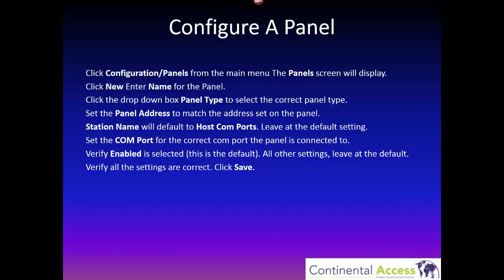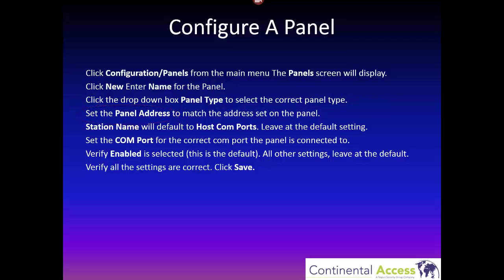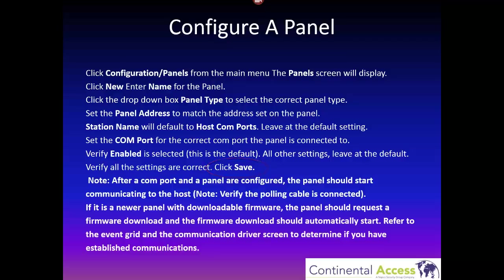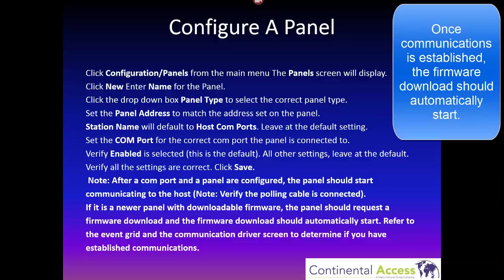To configure a panel, click Configuration then Panel, click New, enter the name for the panel, click the drop-down box, and select your panel type. Set the panel address — the station name will default to host comm ports. Set the comm port to the correct comm port the panel is connected to, and verify that Enabled is selected (it is selected by default). Leave all other settings at the default and click Save. After a comm port and panel are configured, the panel should start communicating to the host. You must verify the polling cable is connected prior to communication. If it is a newer panel with downloadable firmware, the download should automatically start.